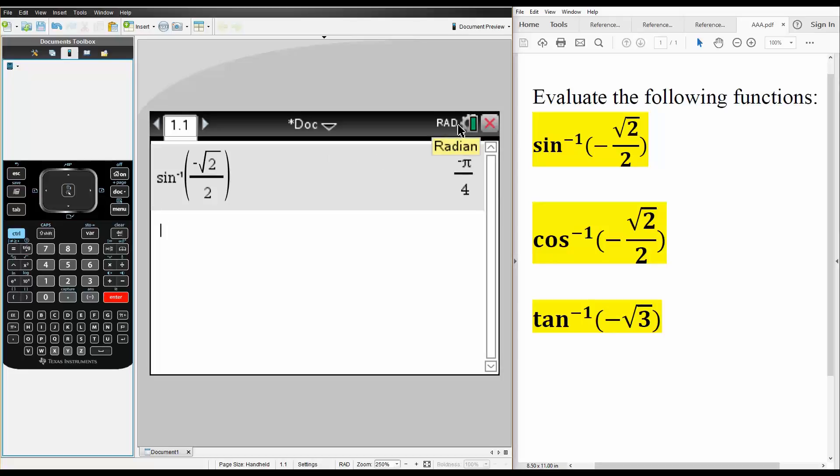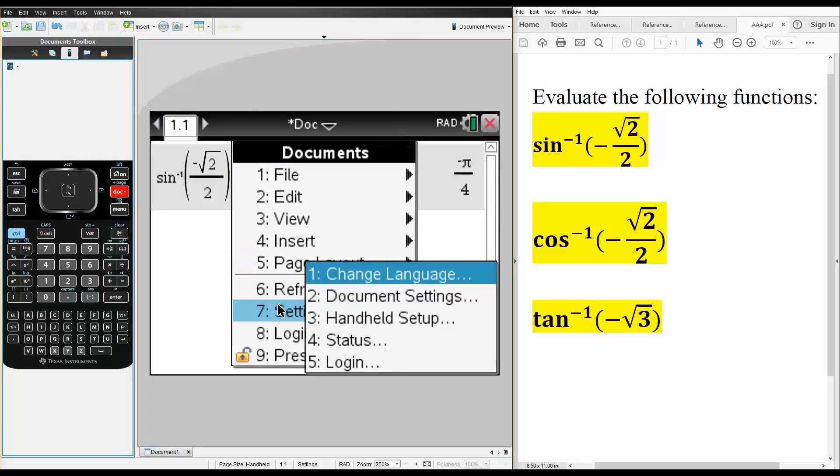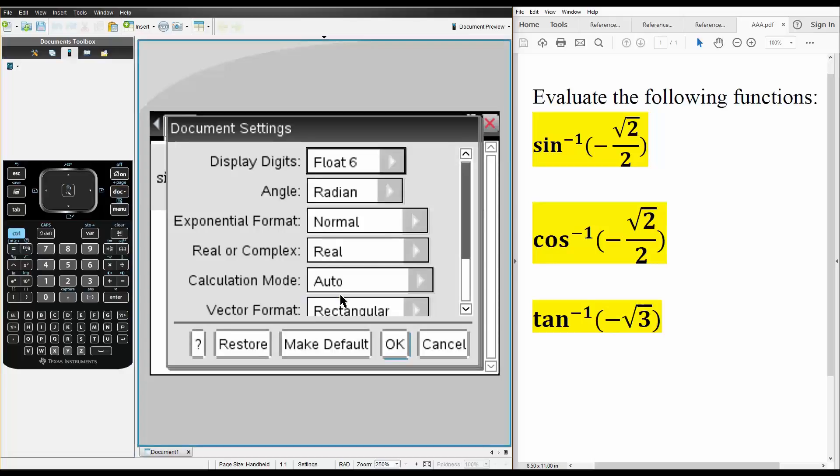And let's say, for example, you were in degrees and you want to go to radians, this is what you need to do. You hit doc, you go to 7, settings, and then you hit document settings. And you might be in degrees, so you need to change it to radians, typically.